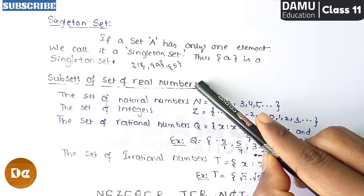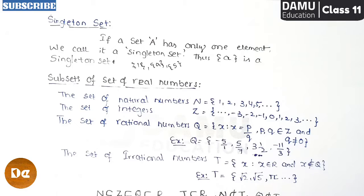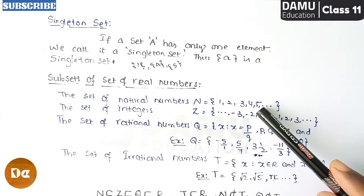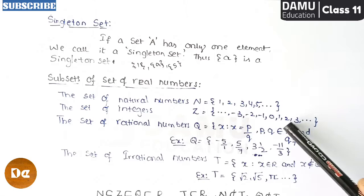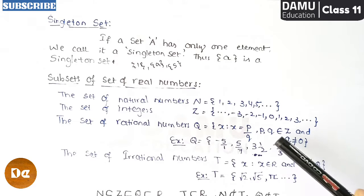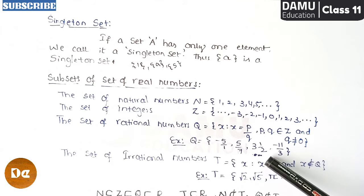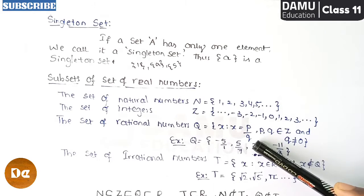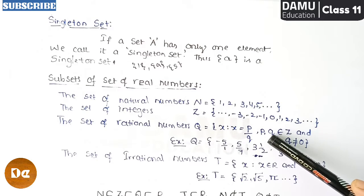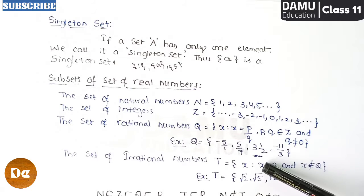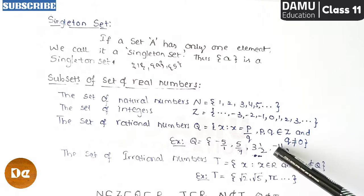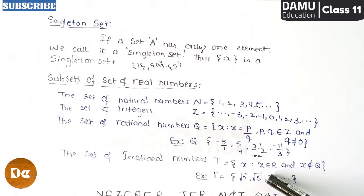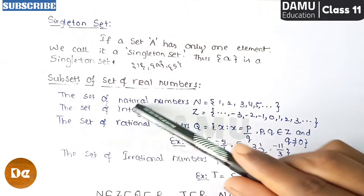Now, what are the subsets of the set of real numbers? We have the set of natural numbers, the set of integers, the set of rational numbers, and the set of irrational numbers — all of which are subsets of the real numbers. We need to check how this chain is moving, and which sets are subsets or not subsets of rational and irrational numbers.